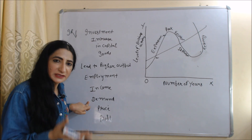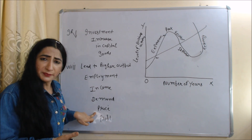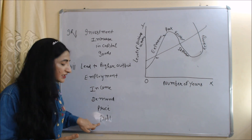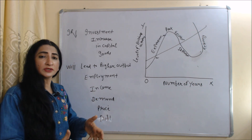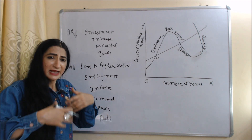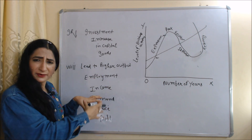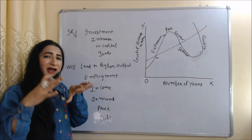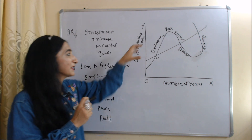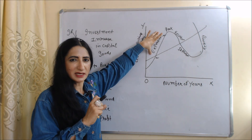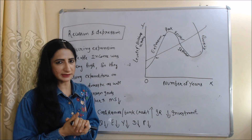As employment increases, national income increases. As national income increases, demand for goods and services will also increase — with higher income, people buy more goods and services. As demand increases, prices also increase. As prices increase, profit of producers also increases, and this increased profit motivates producers to invest more and produce more. As a result, investment, production, employment, income, demand, prices, and profit all increase, and ultimately the economy moves towards the expansion path of the business cycle.